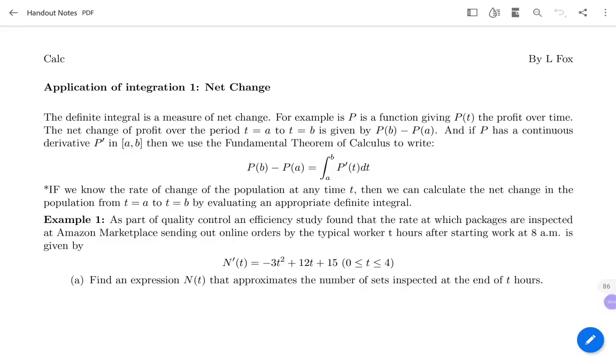The definite integral measures net change. For example, if P is profit over time, the net change of profit from A to B would be found by doing the total profit from B minus the total profit from A. That will tell you the net change in all the profit. If P is continuous, it has the derivative P prime, and we would use the fundamental theorem of calculus. We would evaluate if we knew a rate of change, we could take the antiderivative to the upper bound minus the lower bound, and that's going to give us net change.